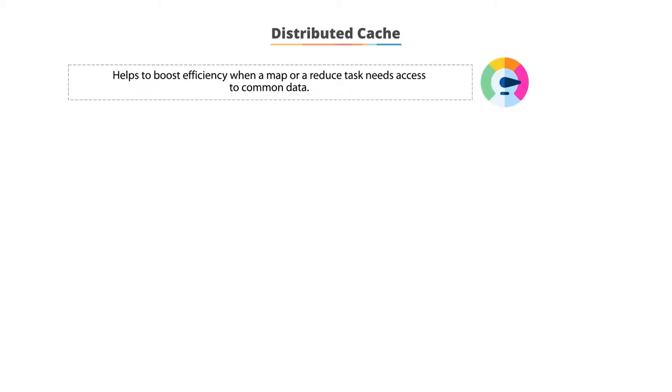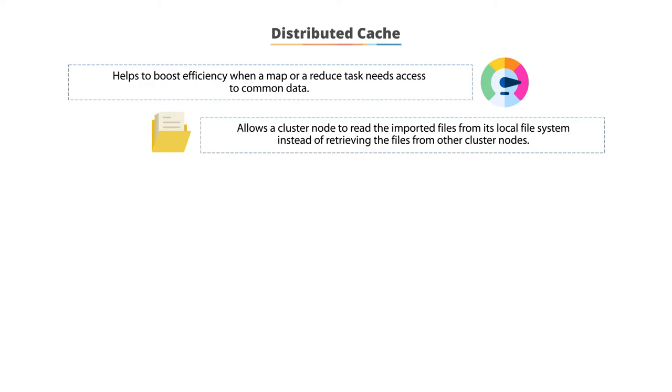Let's look at distributed caching. A distributed cache is a Hadoop feature to cache files that are needed by the applications. A distributed cache will help boost efficiency when a map or reduce task needs access to common data.